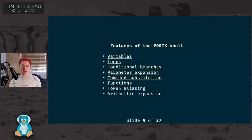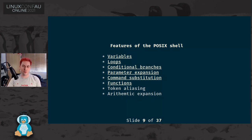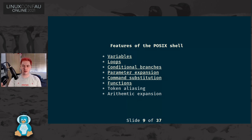It has many features familiar to anyone who's looked at many other programming languages. You have variables, control flows such as loops and conditional branches. You have parameter expansion, which allows you to pass variables as arguments to other applications and functions. There's command substitution, which allows you to take the text output produced by a command or a function and store that in a variable or pass it to another command. You can even define functions.